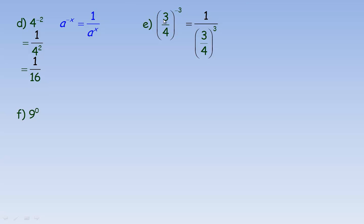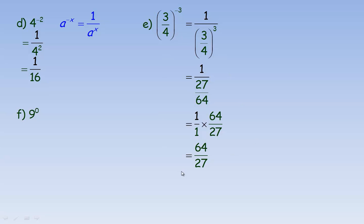For example e, we have 3 quarters to the power of negative 3. Using the negative exponent rule, this means the reciprocal: 1 over 3 quarters raised to the positive power of 3. We cube the 3 quarters: 3 cubed is 27, and 4 cubed is 64, giving 1 over 27/64. To divide fractions, multiply by the reciprocal of the denominator, which is 64 over 27. So 1 times 64 over 1 times 27 equals 64 over 27.